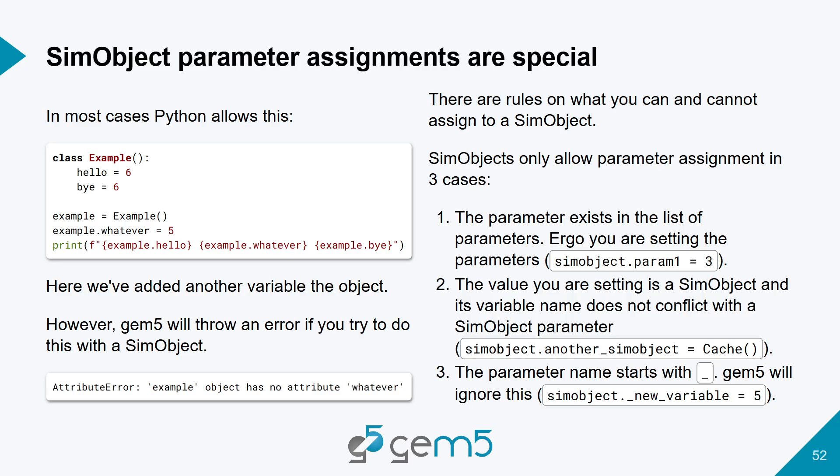SimObject parameter assignments are special. In regular Python you can create a class with two properties — say hello and bye — instantiate it, and then add a new property called whatever on the fly. That's completely valid Python. But if you try to do something similar with a gem5 SimObject, you'll get an attribute error: example has no attribute whatever.